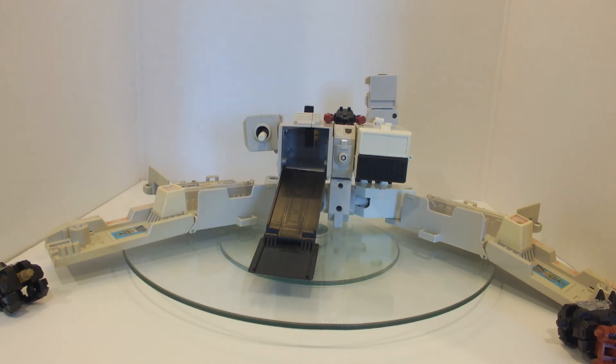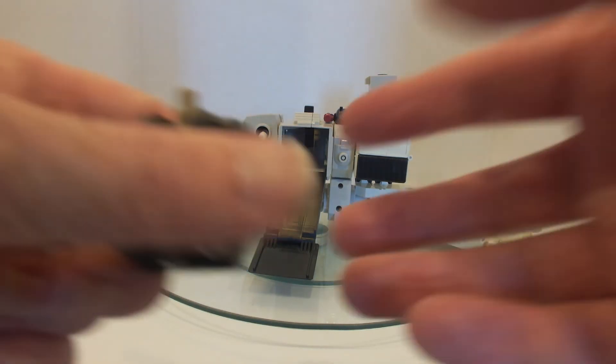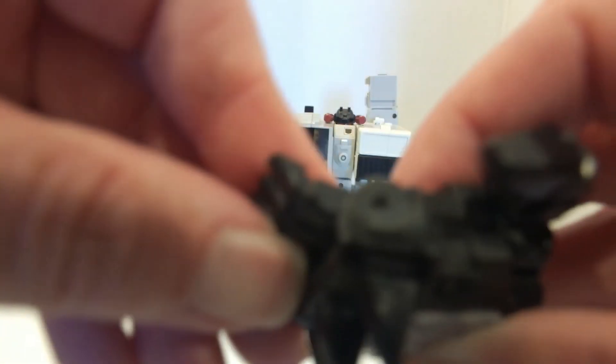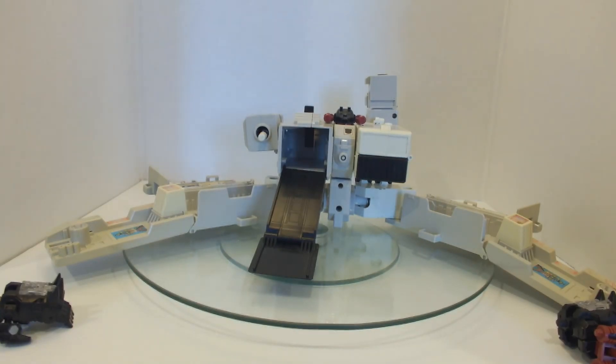I just have this Metroplex and for years he didn't have hands so when I found out that you could use those Power of the Primes or Combiner War hands in the slots I was like cool you know he can finally have hands and do things. So just show you those hands so the fingers are not anything great but you do have that thumb you can hold a weapon and that's the well I think that's the only weapon part I really have.